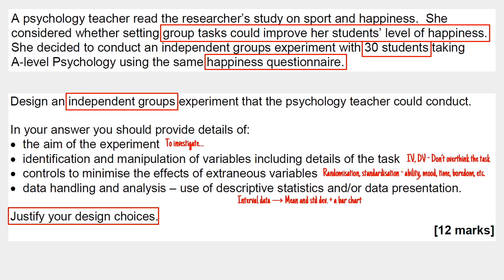And then finally, your data handling and analysis. It specifies that you need to be using descriptive statistics — so that is the mean, mode, median, standard deviation, and the range. You need to be thinking ahead of time what you want to use and why. I've already made a decision that I'm going to use the mean and the standard deviation, because I already have in mind that happiness levels are going to be measured by interval data. I've also decided to put a bar chart in there, but you don't necessarily need to do that — I'll point that out again when I get to that bit in my answer.